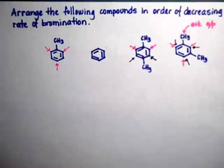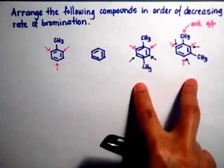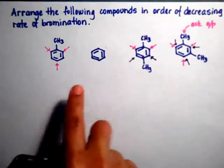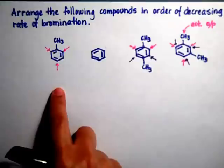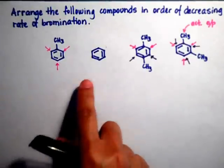Let's put them in order. These two, because they have two methyls, will automatically be more active than the toluene, and the toluene has one activating group, so it's more active than the benzene.